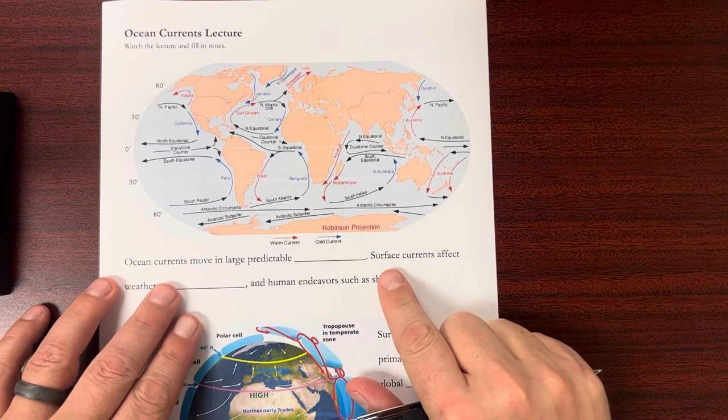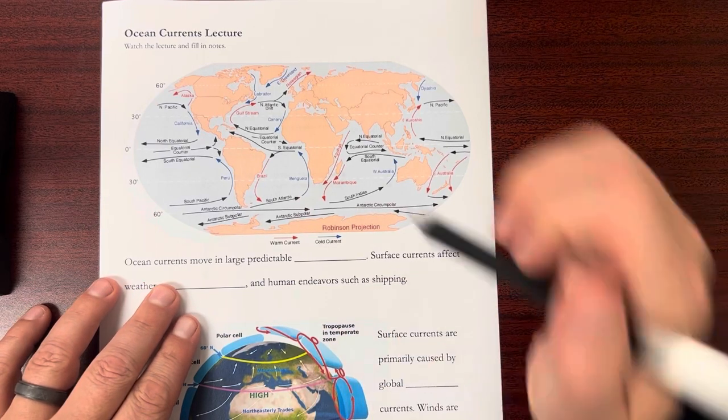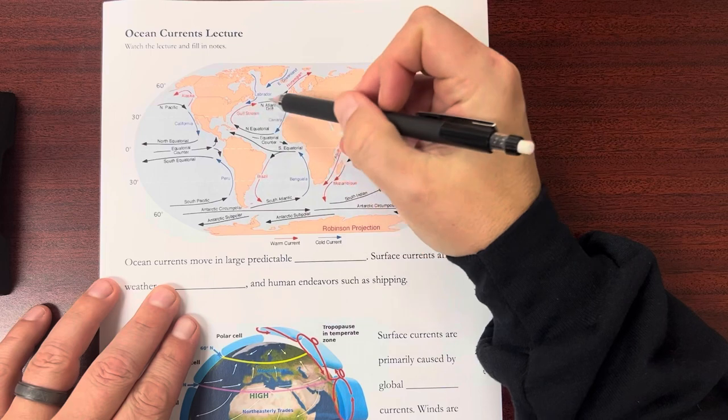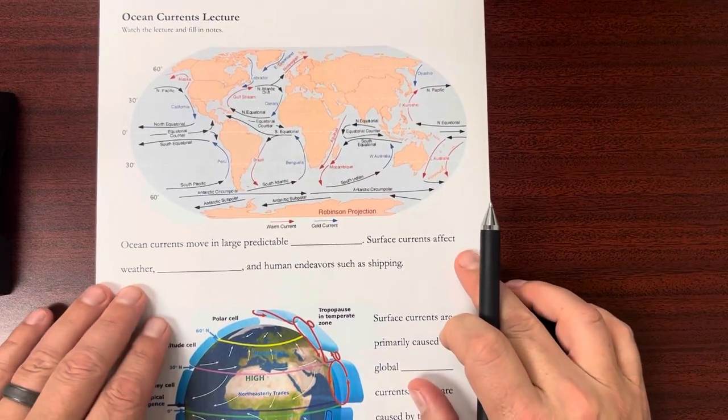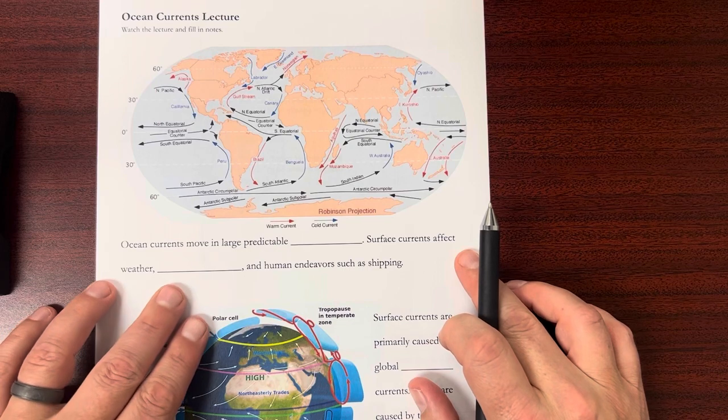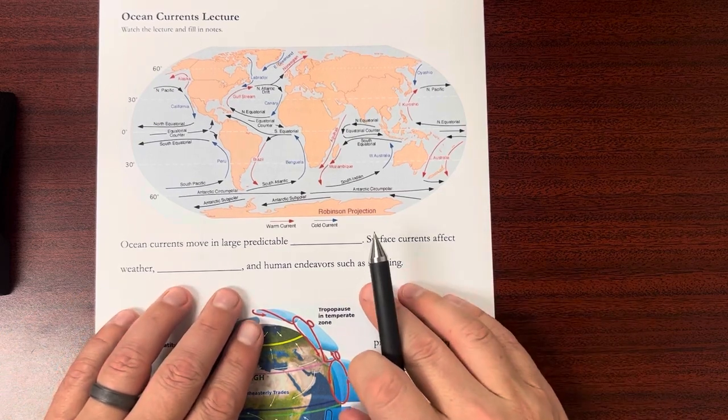So ocean currents move in large predictable patterns. We always see these currents moving in the same directions. Surface currents affect weather, climate, and human endeavors such as shipping.